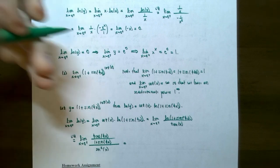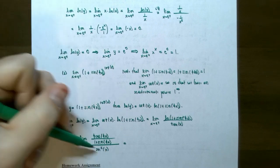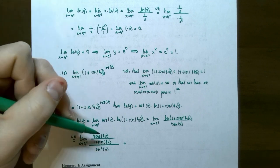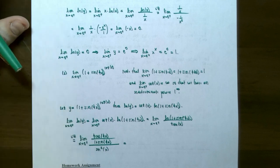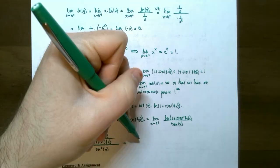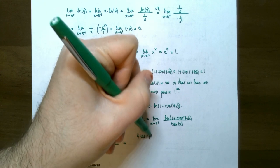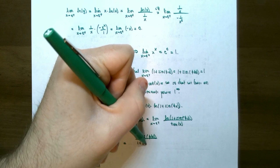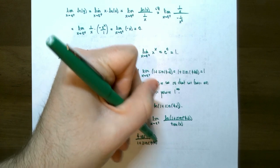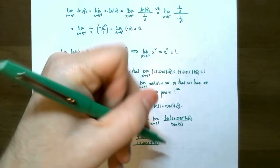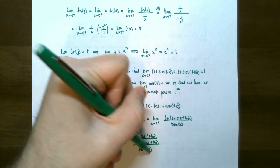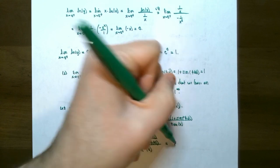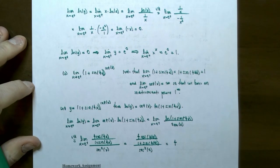Using L'Hôpital's rule, the derivative of the numerator is 4 cosine of 4x divided by 1 plus sine of 4x, using the chain rule for natural log: 1 over the argument times the derivative of the inside function, 4 cosine of 4x. Divide by the derivative of tangent, which is secant squared of x. Since secant of 0 is 1, secant squared of 0 is 1, so this is no longer an indeterminate form.